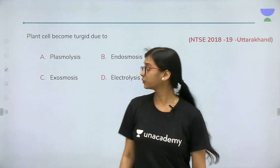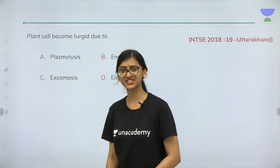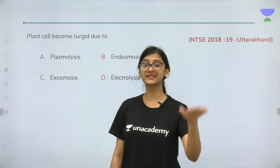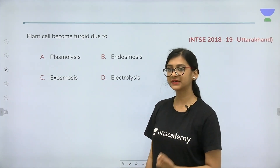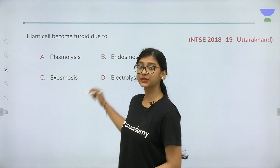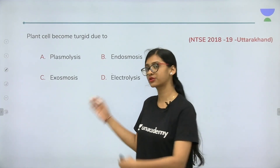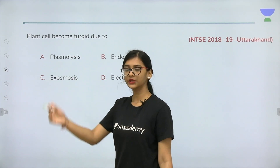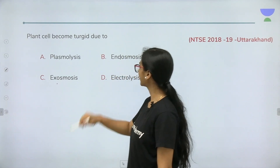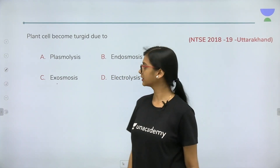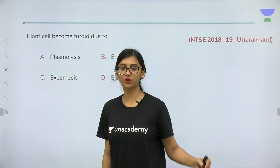Next question: plant cells become turgid due to which process? Options: plasmolysis, exosmosis, endosmosis, or electrolysis. Electrolysis is a chemistry/physics term — not applicable here. The confusion is between exosmosis and endosmosis. Exosmosis means release or removal of water molecules or solvent from the cell.